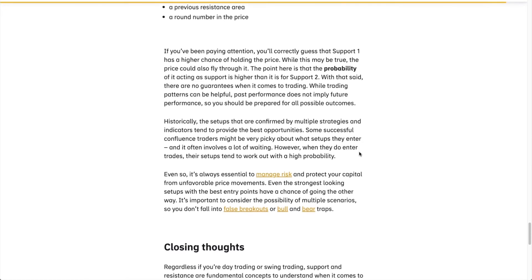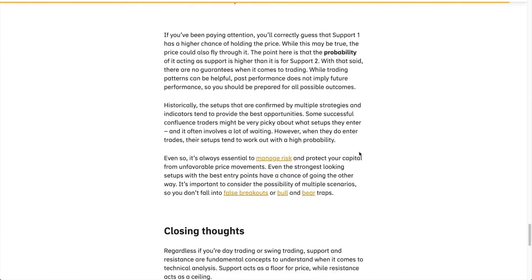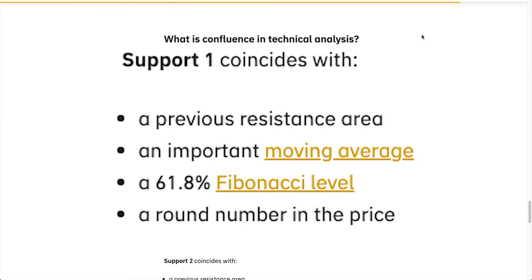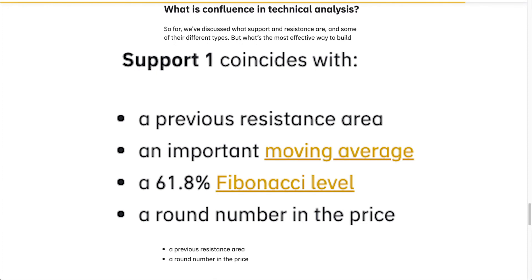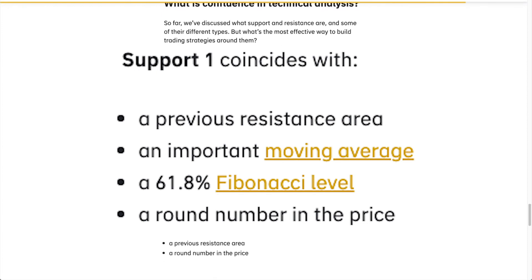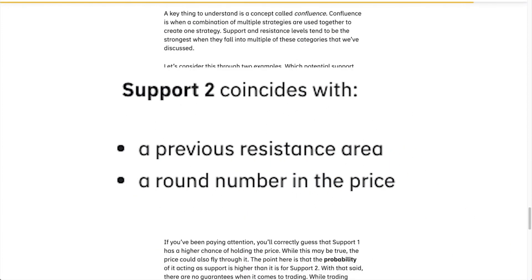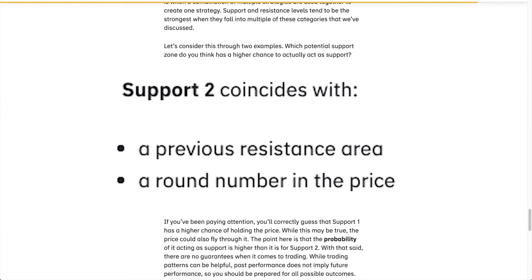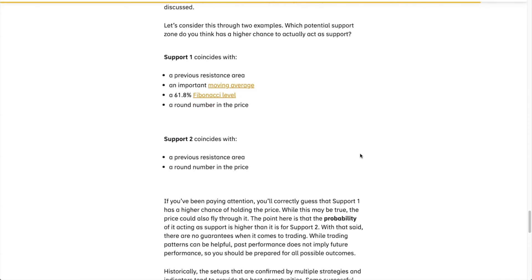Let's consider this through two examples. Support number one coincides with a previous resistance area, an important moving average, a 61.8 Fibonacci level, and a round number in price. Support number two coincides with a previous resistance area and a round number in price. If you've been paying attention, you'll correctly guess that support number one has a higher chance of holding the price.